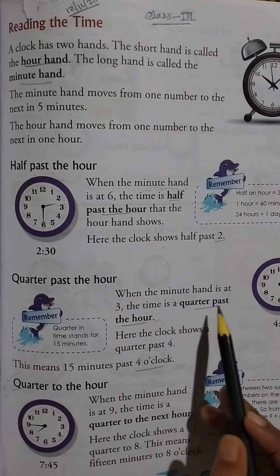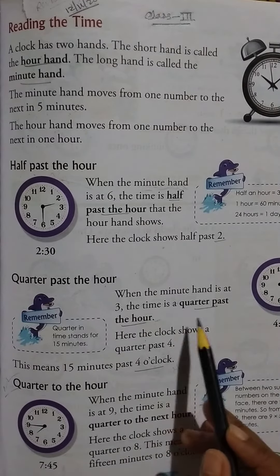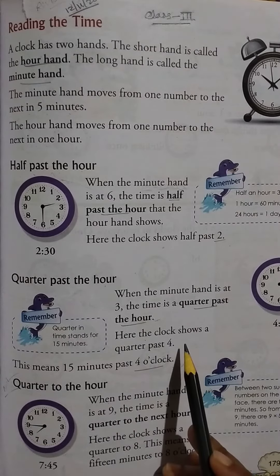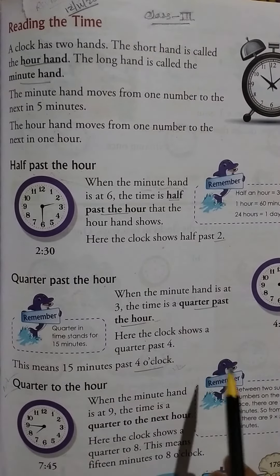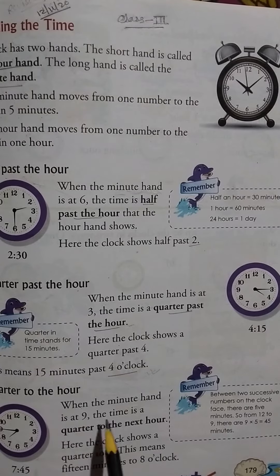When the minute hand is at 3, the time is a quarter past the hour. Here the clock shows a quarter past 4. This means 15 minutes past 4 o'clock. Then, quarter to the hour: